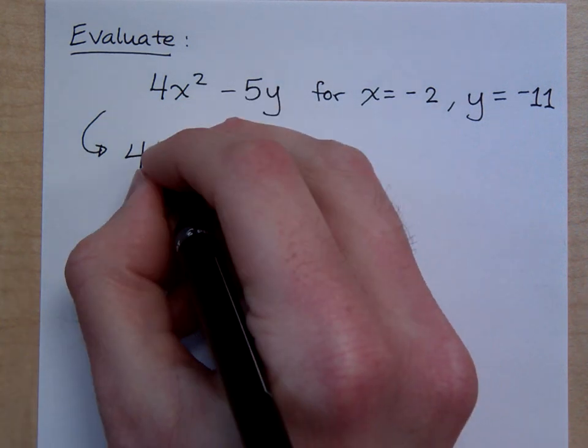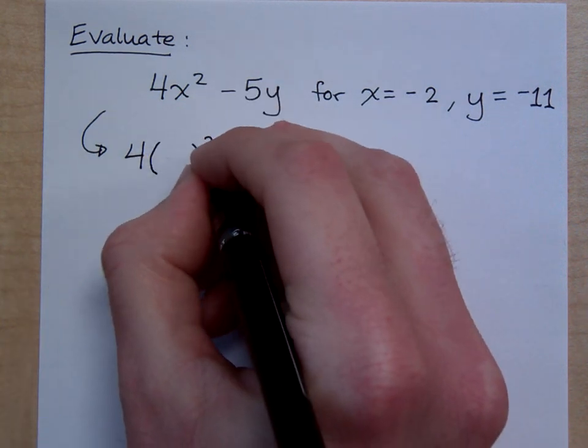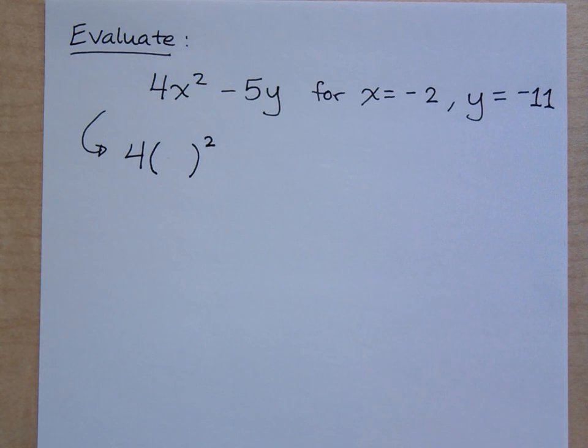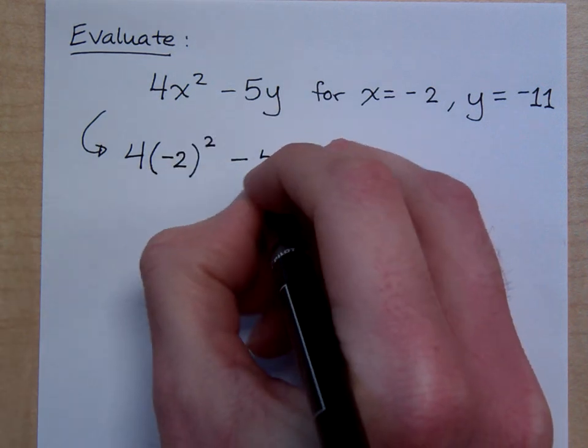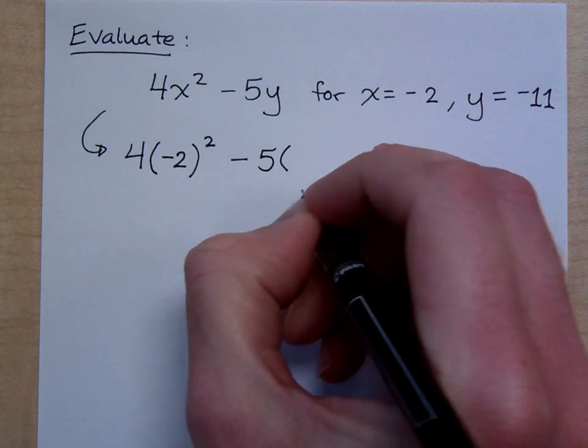So instead of x, I'm going to rewrite that as parentheses and then square it. And what goes inside for the x? Negative 2. And we've got minus 5, instead of the y, replace it with parentheses, and you put in what?